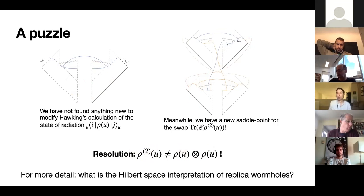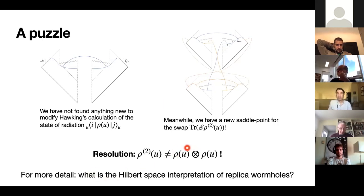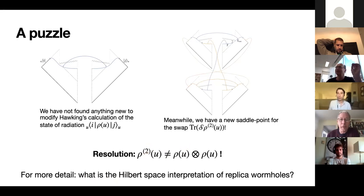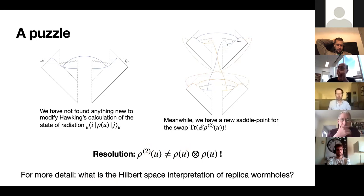The resolution is that the two copies of Hawking radiation are not given simply by a product of the single-copy density matrix. The two-copy density matrix is not just two copies of the single-copy density matrix. This means the von Neumann entropy computed by trace rho log rho is different from the swap entropy.